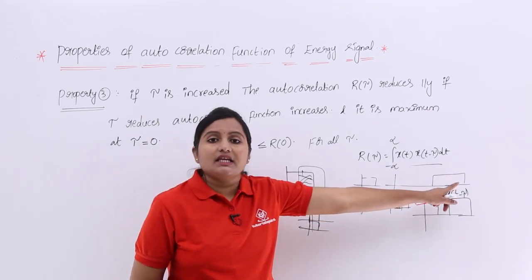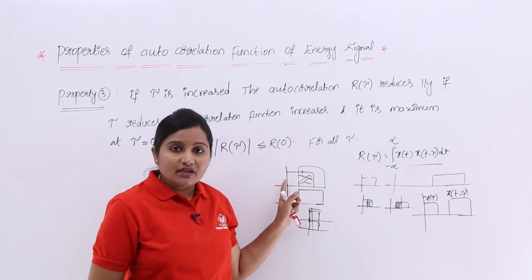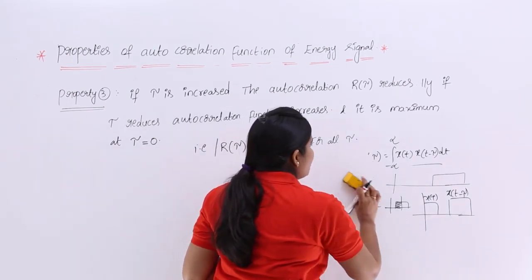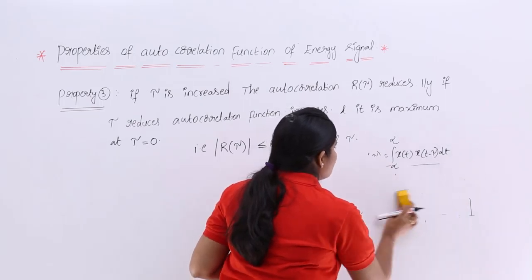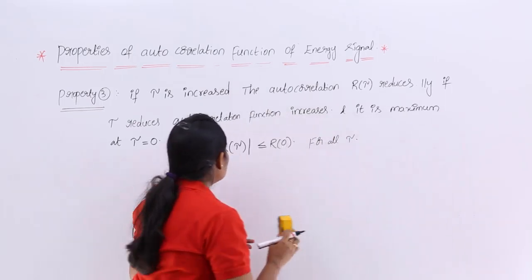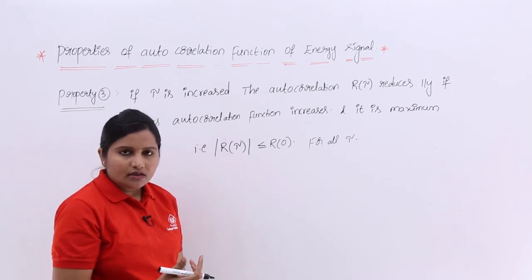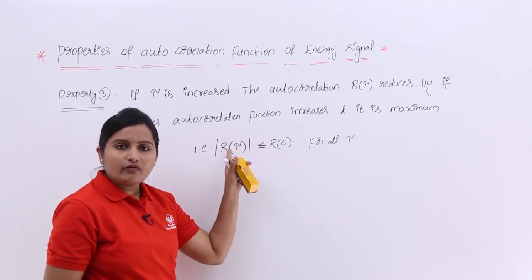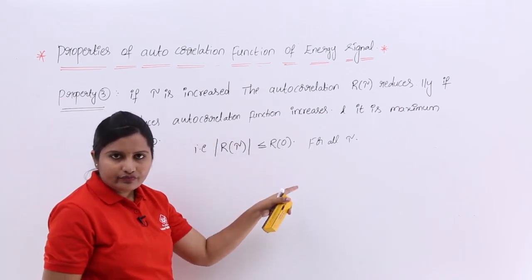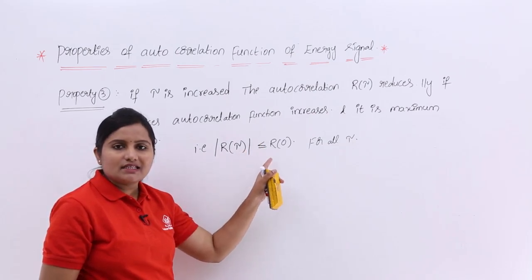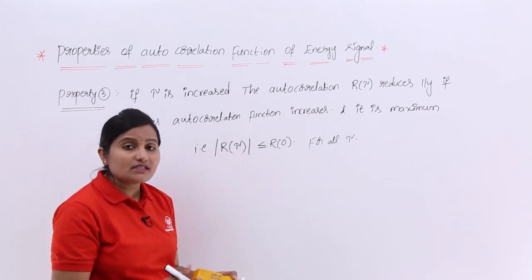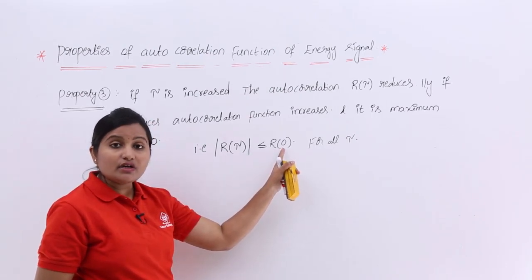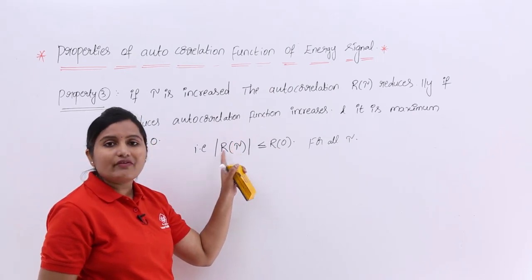The autocorrelation function decreases with an increase in tau and increases with a decrease in tau. This can be stated formally as: the modulus of R(tau) is always less than or equal to R(0), meaning whatever the autocorrelation function value at tau equal to 0 is the maximum compared to all other values of tau.